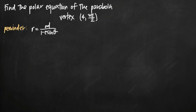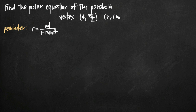Today we're going to be talking about how to find the polar equation of the parabola. In this particular problem, all we've been told about the parabola is that the vertex is at a given point. The important thing to note about this coordinate point is that this is a polar coordinate point in the form r, theta.